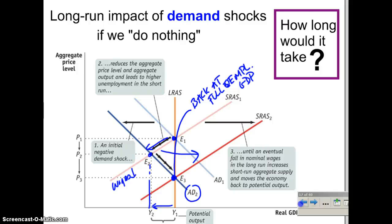The question Keynes asked is: how long would this take? How long are we going to wait? Five years into the Great Depression, people were pretty impatient about looking for a solution. In the Great Recession, which started in 2007–2008, three months in, people were desperate for a solution.